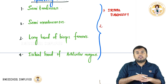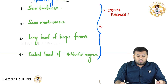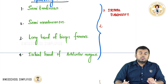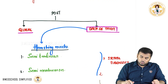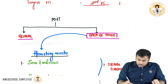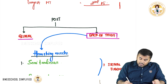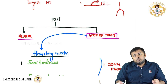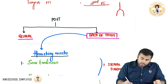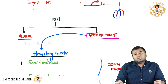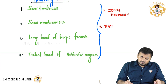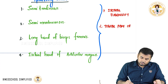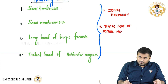The second important thing is their nerve supply. All of them are innervated by the sciatic nerve. The sciatic nerve divides into two branches: one branch is called the deep peroneal nerve and the other is called the tibial nerve. So all hamstring muscles are innervated by the tibial part of the sciatic nerve.